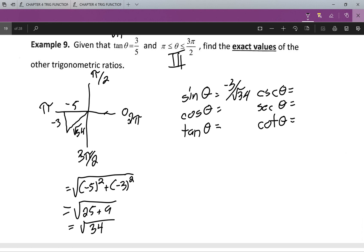My cos theta is adjacent, or negative 5 over root 34. From there, we know that the tan already is 3 over 5.